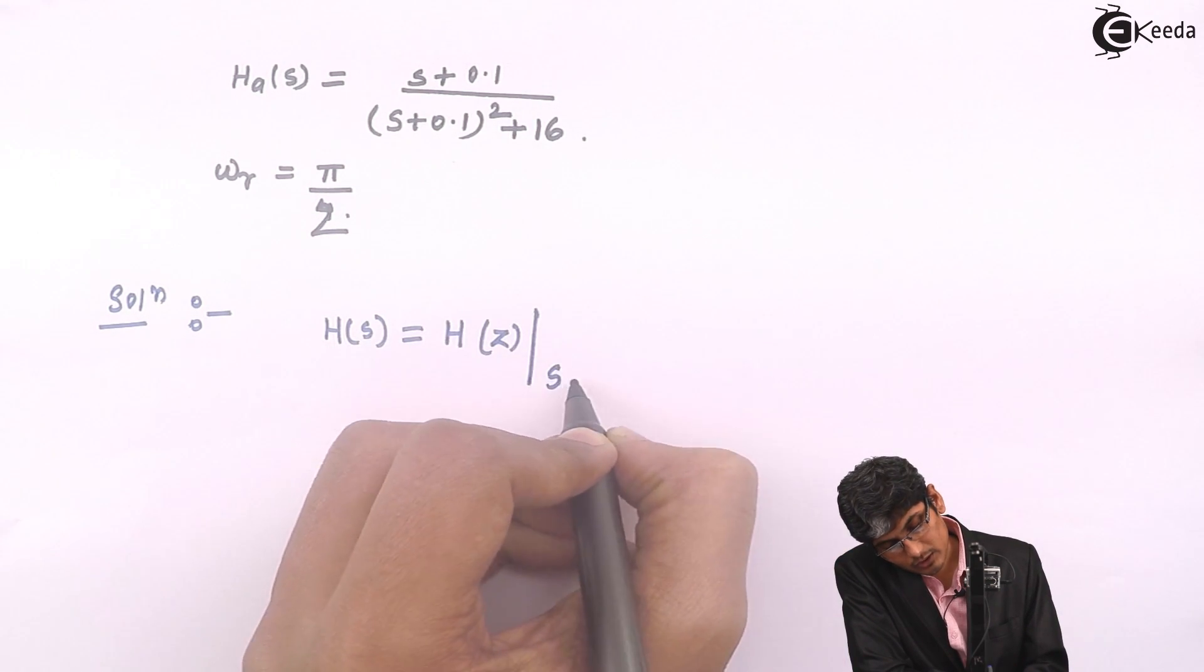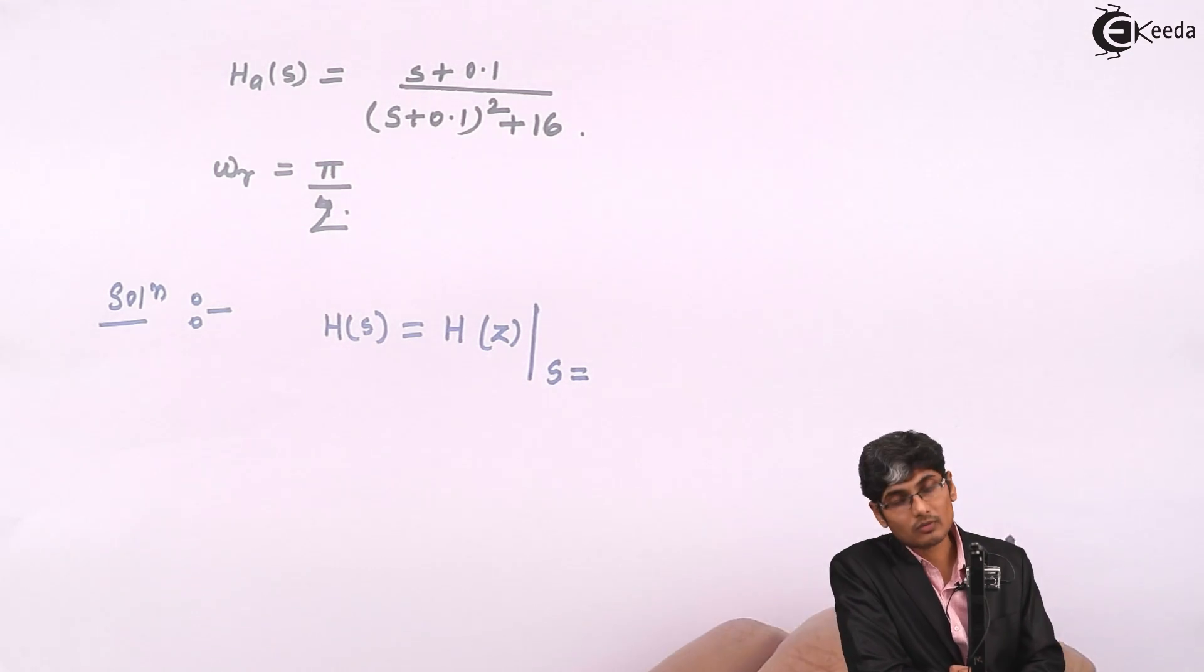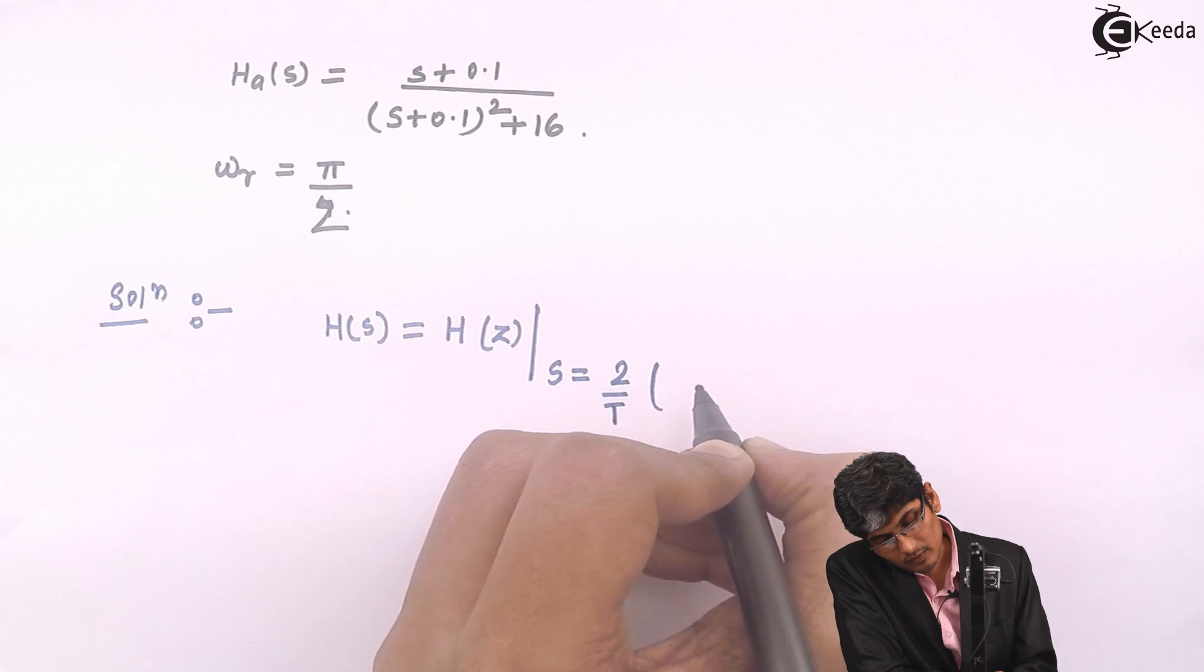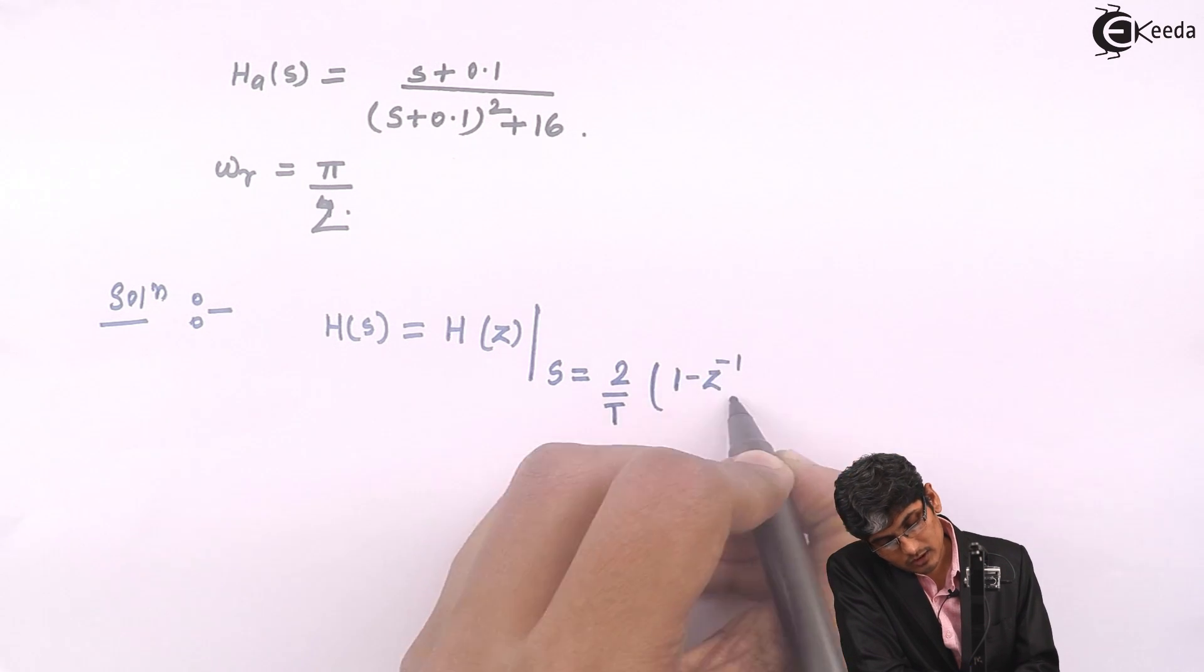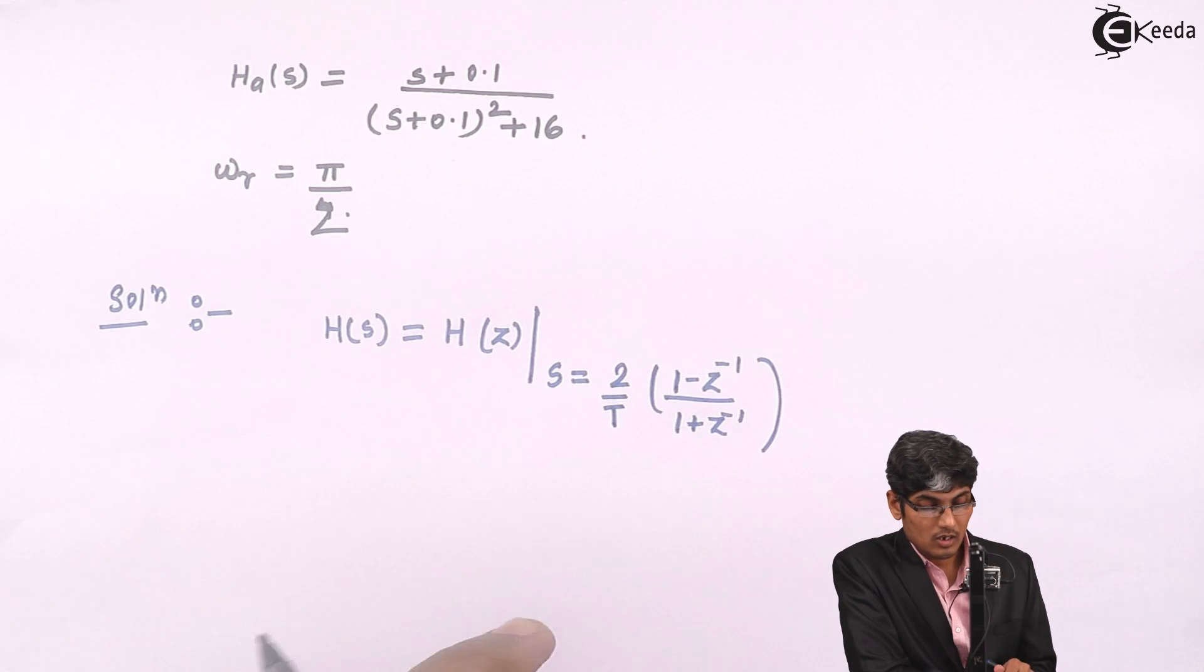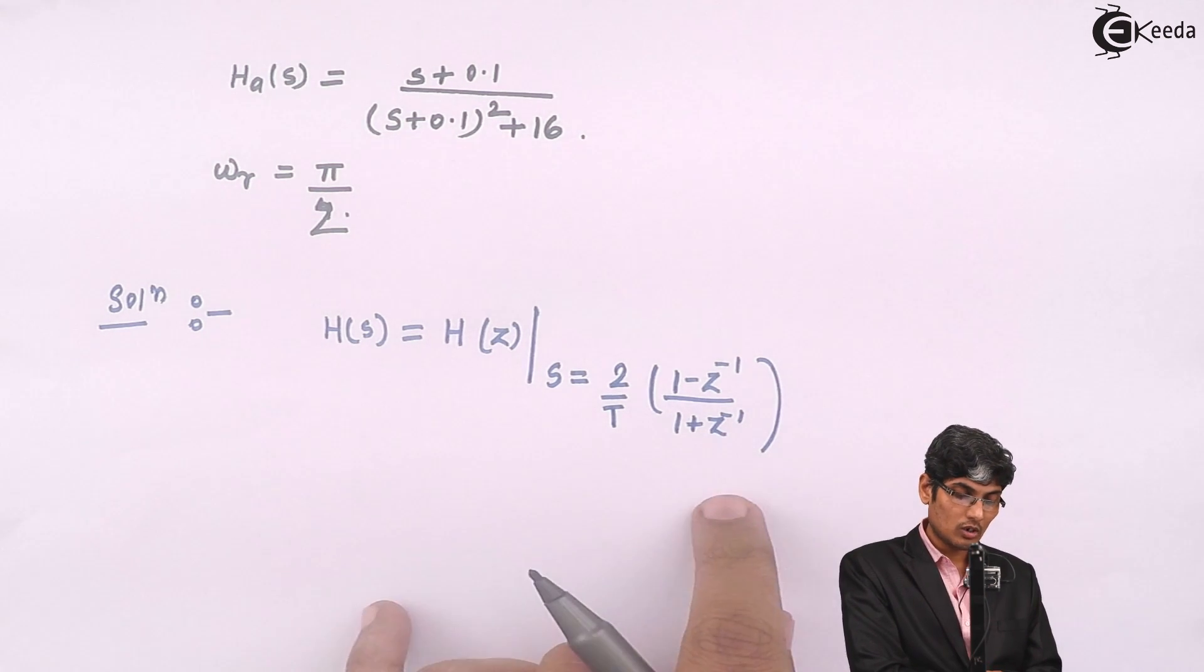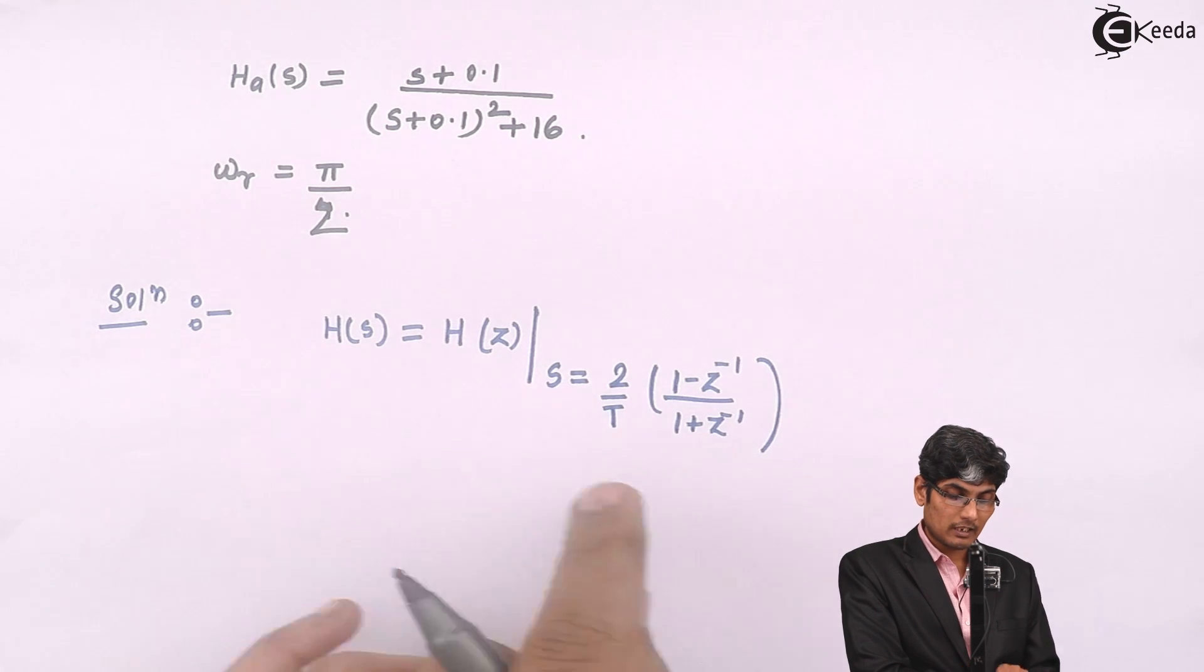If I substitute S is equal to 2 by T, 1 minus Z inverse upon 1 plus Z inverse. So if I replace all S's in the given transfer function into H of S, I am going to get H of Z.